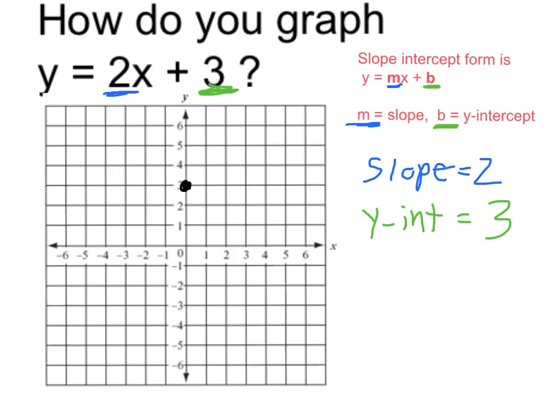By definition, the y-intercept is where the equation crosses the y-axis. We know that's at 3, so I graph the point (0, 3), which crosses the y-axis at 3.